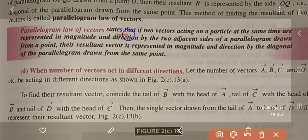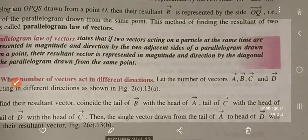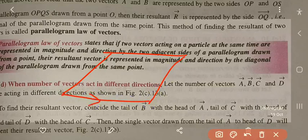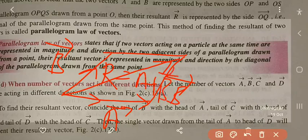The Parallelogram Law of Vectors states that if two vectors acting on a particle at the same time are represented in magnitude and direction by the two adjacent sides of a parallelogram drawn from a point, the resultant vector is represented in magnitude and direction by the diagonal of the parallelogram drawn from the same point. So if A and B are adjacent sides, R equals A plus B is the diagonal.